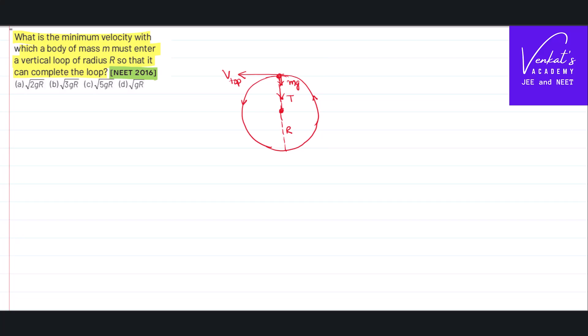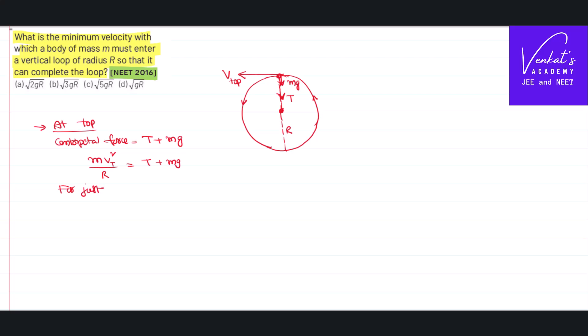Whenever a body is in circular motion, there must always be a centripetal force. At the top, centripetal force is the resultant force acting towards the center. Centripetal force does not come from outside — the existing forces acting towards the center behave as centripetal force. Both tension and weight act towards the center, so centripetal force equals tension plus mg, giving mv_top² / r = T + mg.